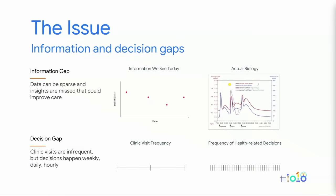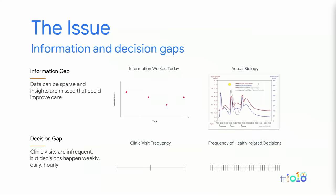We have two main issues we're trying to address. The first is an information gap. Even the most adherent patient with diabetes — my grandfather was one — would check his blood sugar four times a day. But biology is happening all of the time. When I see patients in the hospital, I can see heart rate, blood pressure, all vital signs in real time — but then people go home and biology is still happening. The second issue is a decision gap. You may see a care provider once or twice a year, but health decisions are happening every single day — weekly, daily, hourly. How do we close this gap?